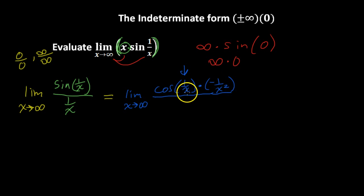We're done with the numerator. The derivative of the denominator is just negative 1 over x squared. Look what happens. We get this factor and this factor to cancel out, and what we're left with is the limit as x approaches infinity of cosine of 1 over x.